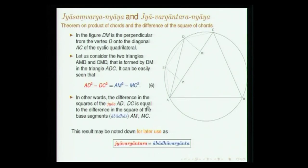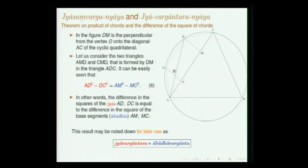Now moving on to the topic of cyclic quadrilaterals. Before taking up the results for cyclic quadrilaterals, I want to present certain important theorems which will be frequently invoked in proving the results. These results are general results that have to do with chords in a circle — they have nothing to do specifically with cyclic quadrilaterals. Any chord in a circle satisfies these results, and any segment in a cyclic quadrilateral is a chord. That is why we are interested in these chord results.